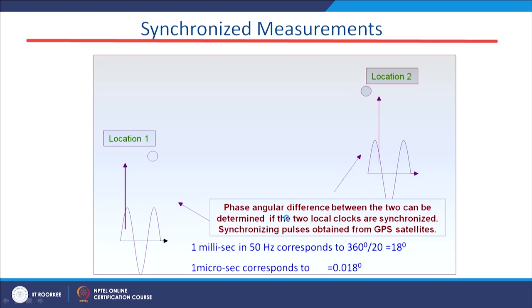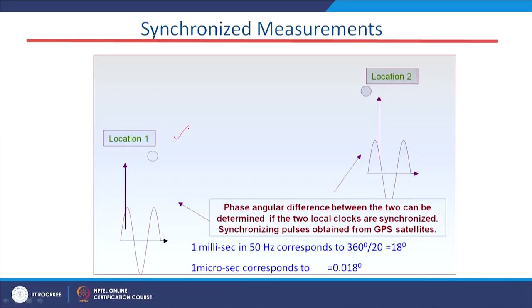Returning to the PMU part — how it measures synchronized phasor voltages and currents. Consider two locations that are apart from each other. At the control center, the voltage phasor V1 from location 1 and V2 from location 2 arrive with the same time stamp. For analyzing these two data sets, the voltage changes must be synchronized; otherwise it is difficult to analyze the two phasors.